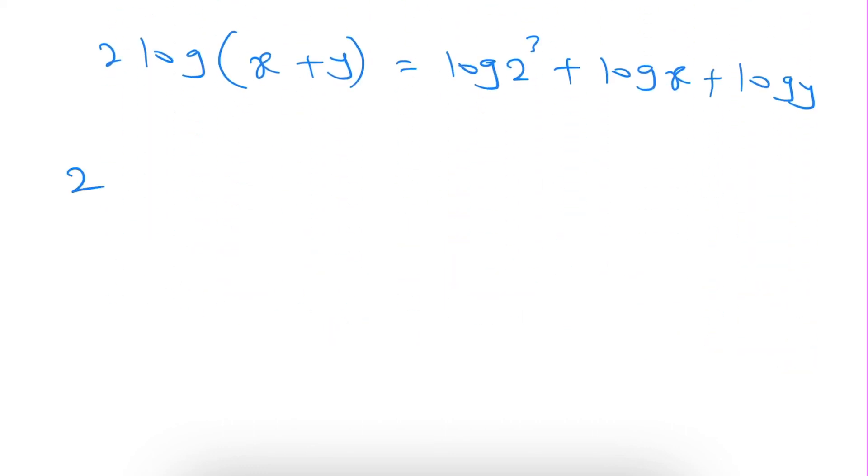Left side one as it is. That is 2 log of x plus y equals, this 3 will come to the front side. So it will remain with 3 times log 2 plus log x plus log y. Hence, proved.